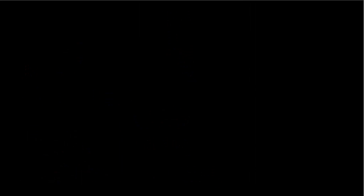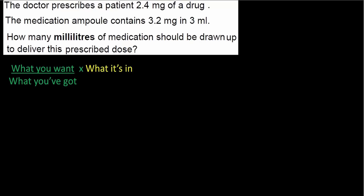Question three: the doctor prescribes a patient 2.4 milligrams of a drug. The medication ampoule contains 3.2 milligrams in 3 millilitres. How many millilitres should be drawn up to deliver this prescribed dose? This is a classic liquid dose question. The formula is: what you want over what you've got, times what it's in — or, putting the patient first: patient over stock times volume.